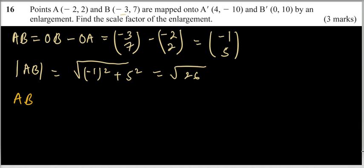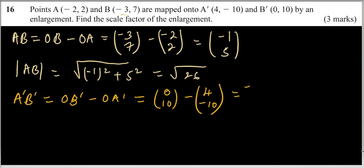Then we go to A'B'. It is equal to, we should say it is OB' minus OA', which we just invert OB' and we write it in column form. That is (0, 10). You minus OA' should be (4, -10). And that should give you 0 minus 4, that is -4. And the 10 minus -10 is 10 plus 10, that will give you 20. So those are the magnitude of A and B.